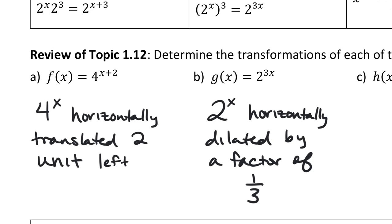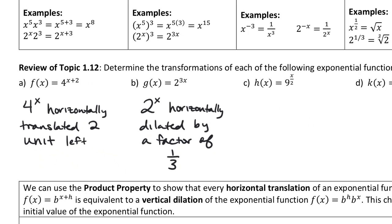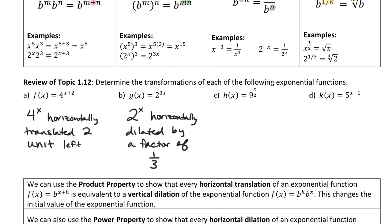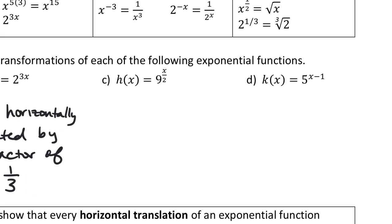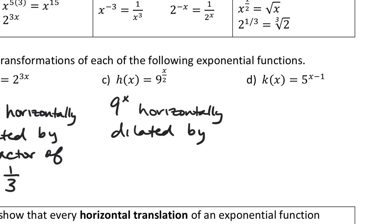We can look at exponential functions and pull out the type of transformation done to them. For letters c and d, write down what the original function was and what we've done to it. For letter c, what was the original function? 9 to the x. And what have we done to 9 to the x? Horizontally dilated — very good. We have horizontally dilated by a factor of 2.